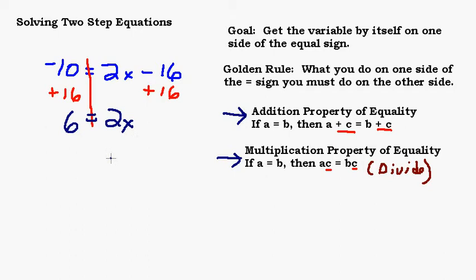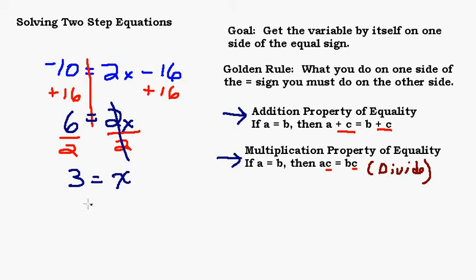Negative 10 plus 16 is 6. Bring down my equal sign, bring down my 2x, and the plus and minus 16 cancel each other out. Now I need to use the multiplication property of equality, because this is 2 times X. I could either divide by 2 or multiply by 1 half — most people divide by 2 because they don't like using fractions. So dividing both sides by 2: 6 divided by 2 is 3, and those 2s cancel, leaving X equals 3.